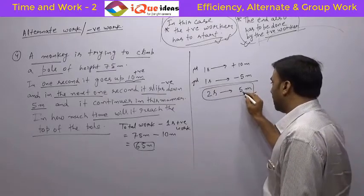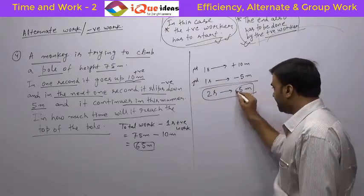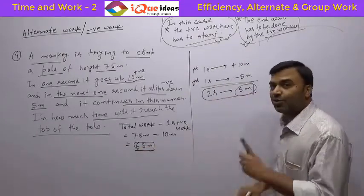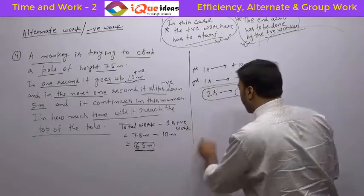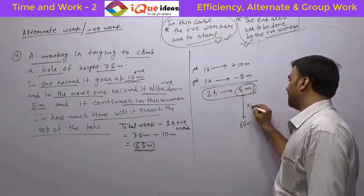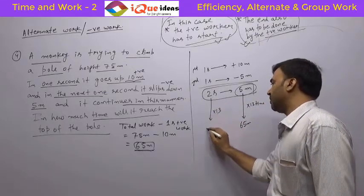So in two seconds, it is going 5 meters. Now what do we do? Do we take a multiple near 75? No. We take the multiple of 5 meters near to 65. In this case, coincidentally, 65 is a direct multiple of 5. So how many times? It is 13 times. So that means this will also become 13 times 2, that is 26 seconds.